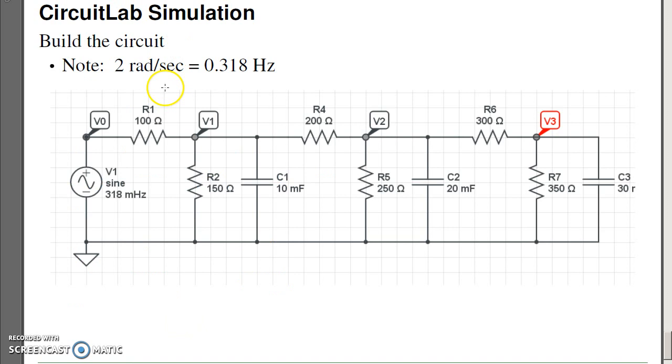If I simulate in CircuitLab, you build the circuit, label the nodes. The input is a sine wave at 0.318 hertz. Again, the input is two radians per second. Omega is two pi f. So the frequency is radians divided by two pi, 0.318 hertz.